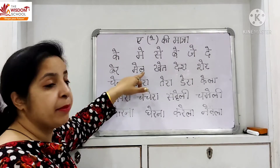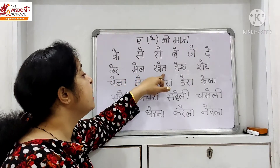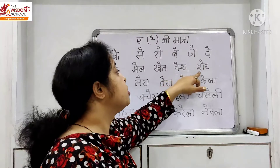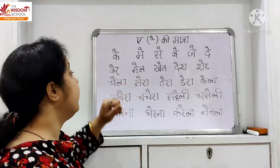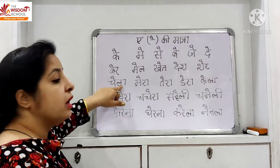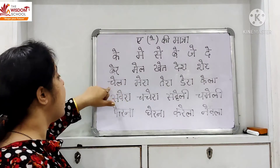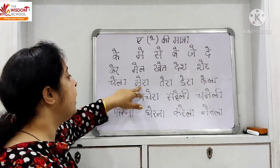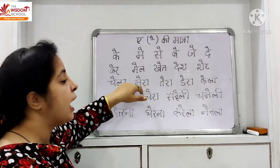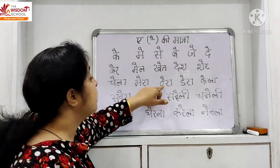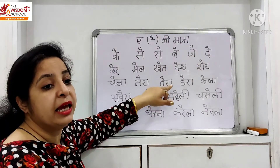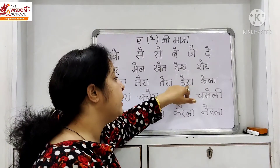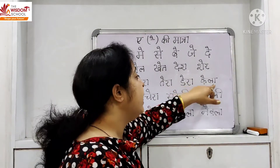La. Mail — kya ban gaya bita? Mail. Khe. Khe — kya ban gaya? Khe. Da — A ki matra — De. Ra — A ki matra — Ra. De Ra. Khe La. Aage neeche dhekho bita.